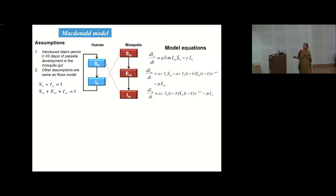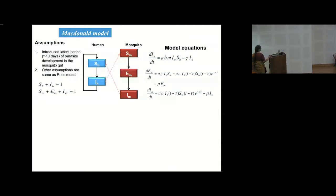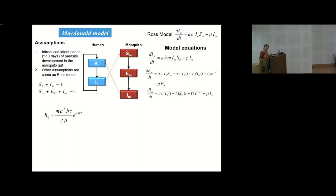So R0 in McDonald's model is very similar to Ross's but includes this exponentially decreasing term with respect to the time delay tau — the latent period. The simulation shows that I_H and I_M still grow and stabilize, but there is a big difference: I_M stabilizes at a much lower level and growth is much slower. This matches real malaria data, where growth of the disease in a population is slower than Ross had predicted.